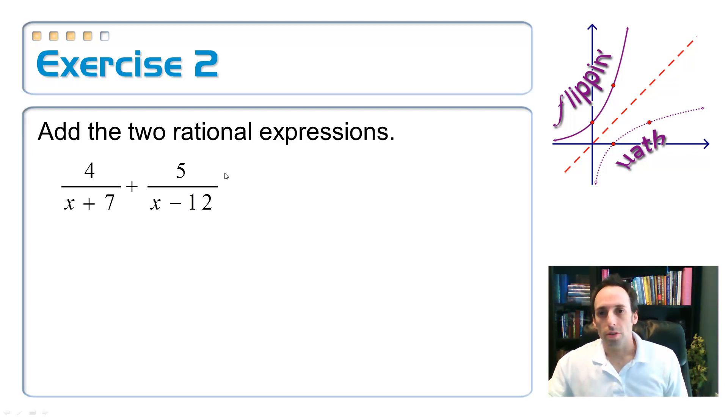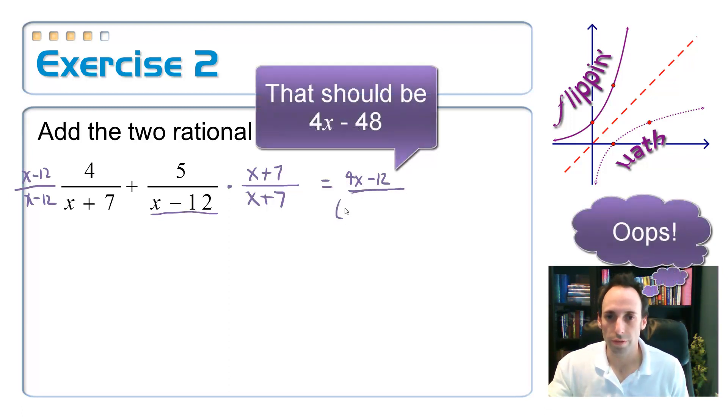Add these two rational expressions. So just like the other one, if I just multiply the two denominators together, I can get a common denominator. It may not be the least common denominator, but it's a place to start. It will always work. It's just that sometimes it might be too big. So the one on the left, we'd have to multiply it times x minus 12 on the top and the bottom. And the one on the right, you'd have to multiply by x plus 7 on the top and the bottom.